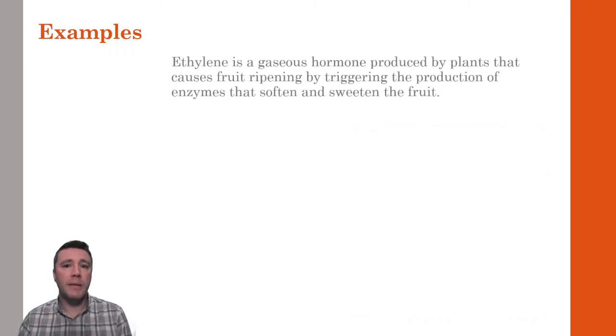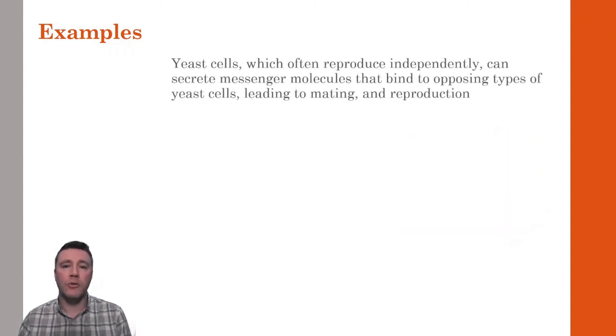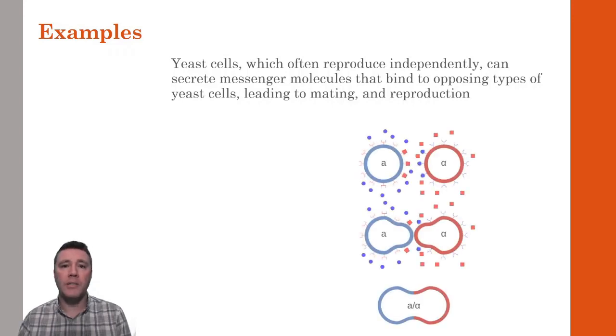Signal transduction is not limited to animals, however. Plants produce a gaseous hormone called ethylene, which initiates the ripening process by activating genes that produce enzymes to soften and sweeten the fruit. Even fungi have signal transduction pathways. Although yeast cells can reproduce asexually, if two yeast types are present, A and alpha, they release pheromone molecules to which each other are sensitive. This leads to a fusion and eventual reproduction of those cells in a process cutely named yeast mating.